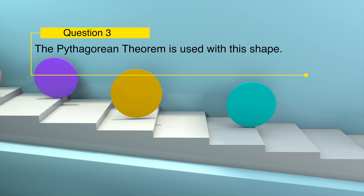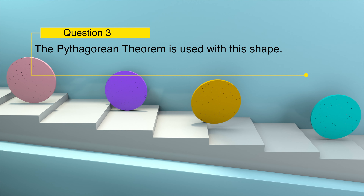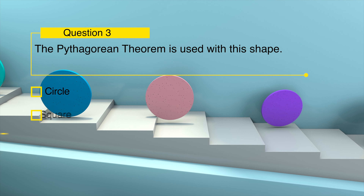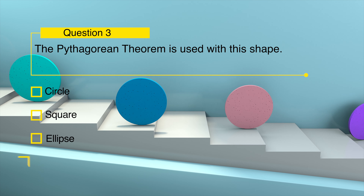The Pythagorean theorem is used with which shape? Circle, square, ellipse, or triangle?